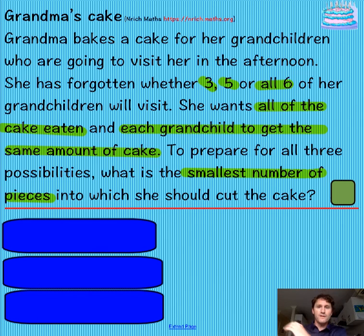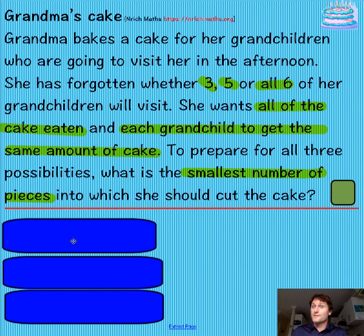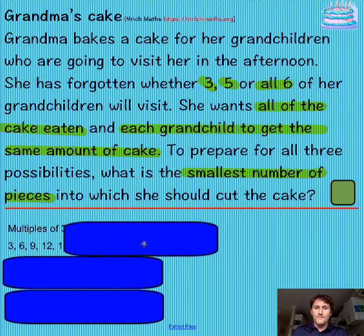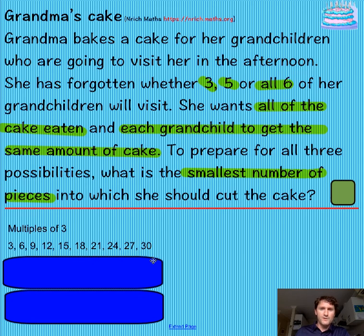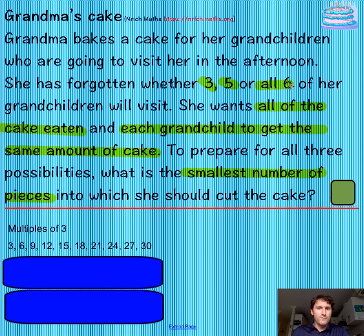If three children turn up at grandma's place wanting cake, the smallest number she could cut it into to make sure each child gets one piece is three. So we're going to look at the multiples of three. She could cut it into three pieces and each child gets one piece — they'd be happy. Here are our multiples of three — I've included the first ten. But our answer can't be three, because what if five children turn up? If she cuts it into only three pieces and five kids turn up, a couple are going to miss out. So we also need to think about the multiples of five.